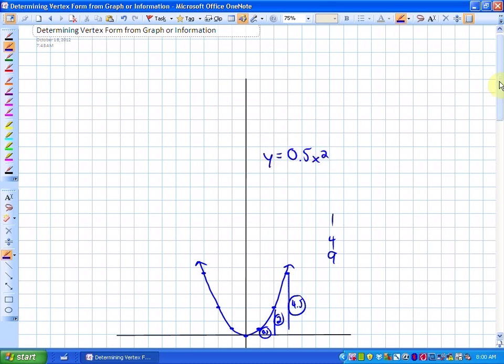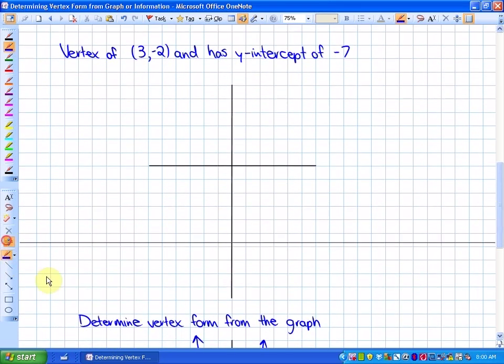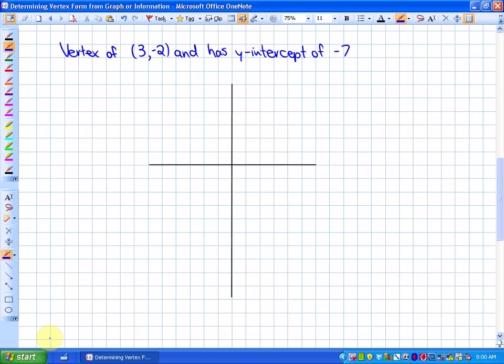All right, let's look at some, I think, two specific examples. Let's look at the vertex form of this function. A vertex of 3 and negative 2 and a y-intercept of negative 7. Where I would suggest starting, you don't have to, is graph the function. So here's your vertex of 3, negative 2, and a y-intercept of negative 7. So here's what the function looks like.